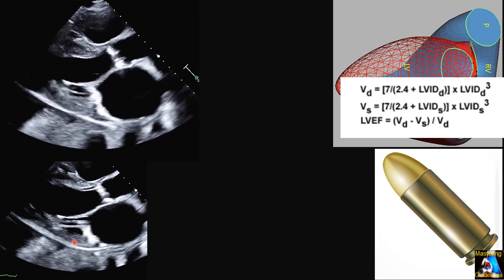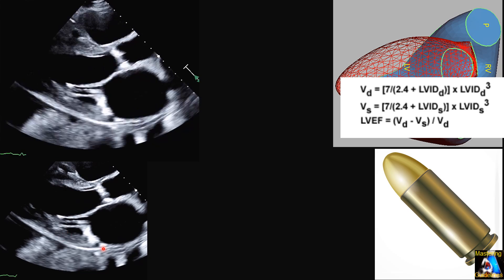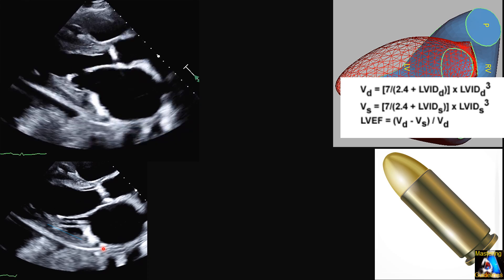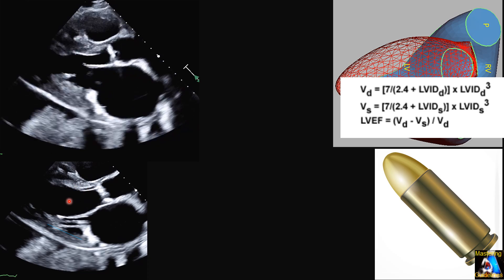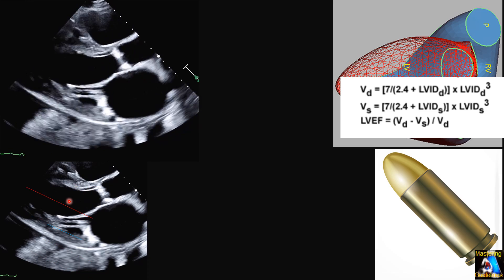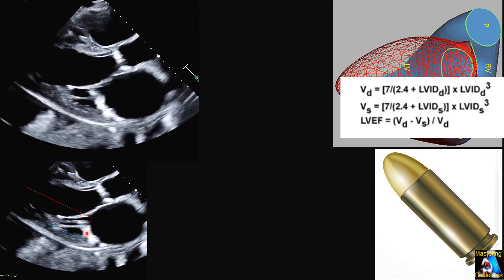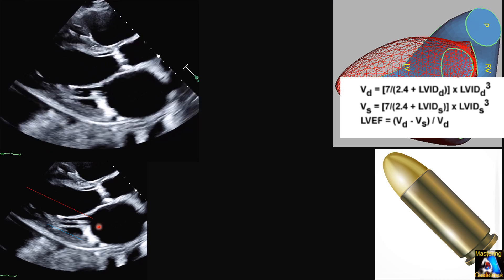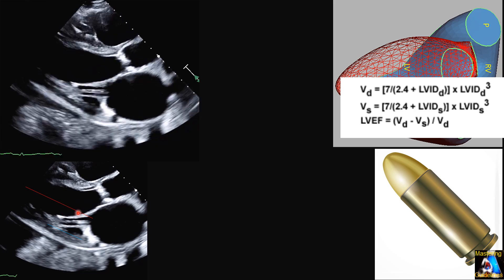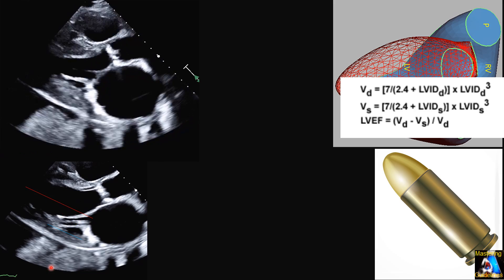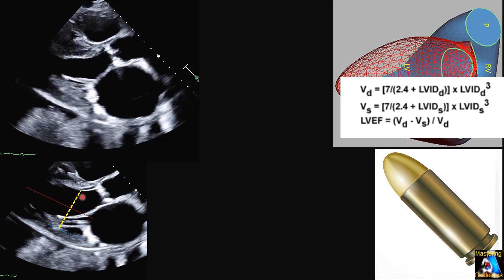When we find the compact endocardium of the posterior wall, at the end of diastole — between Q and R — we identify the point with the largest diameter. After determining the compact endocardium of the posterior wall and septum, we draw a line between the two papillary muscles, perpendicular to the left ventricular long axis.